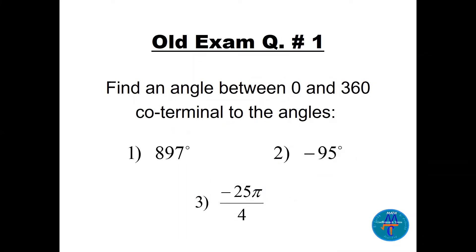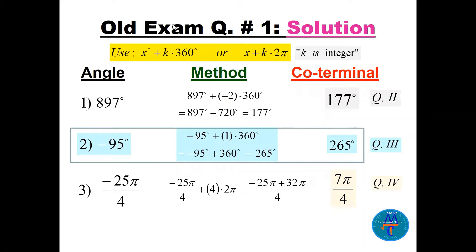Question number one: we need to find an angle between zero and 360 which is a positive angle coterminal to the angles 897°, -95°, and -25π/4. The whole idea is to use the coterminal formula — subtract multiples of 360 or 2π. Since 897 is a large angle, we subtract two complete cycles: 897 minus 720 equals 177, which is in quadrant 2.